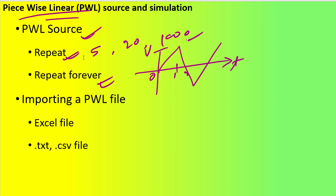One more advantage of this PWL source type is that we can use our own file — like an Excel file, .txt file, or .csv file. These files are generally generated from oscilloscopes. So if you have some noise signals or sources generated from oscilloscopes, you can import them into your LTSpice simulation. Similarly, a function generator can export special sources in .csv or .txt format, and those can also be used in your LTSpice simulation.